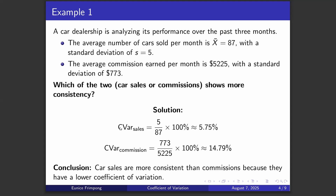The coefficient of variation will help us. We will find the CV for each. Starting with the coefficient of variation for car sales: the formula is standard deviation over mean times 100%. From the question, the standard deviation is 5 and the mean is 87. So we have 5 over 87 times 100%, which is approximately 5.75%.